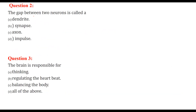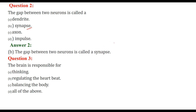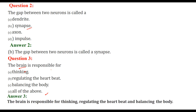The gap between two neurons is called a synapse. The brain is responsible for all control and mostly all the coordination — thinking, regulating the heartbeat, and balancing the body. So the answer would be D, all of the above.